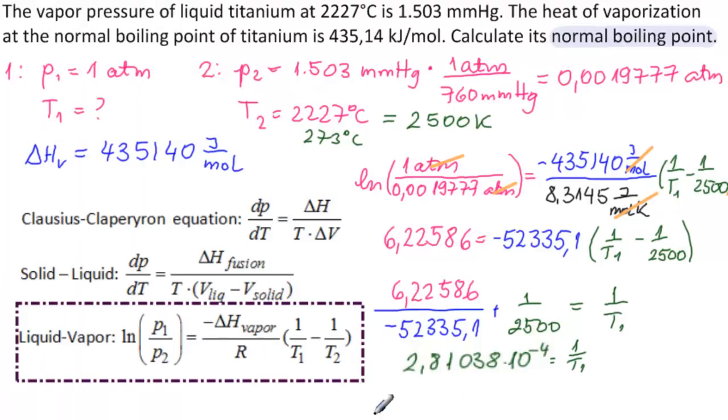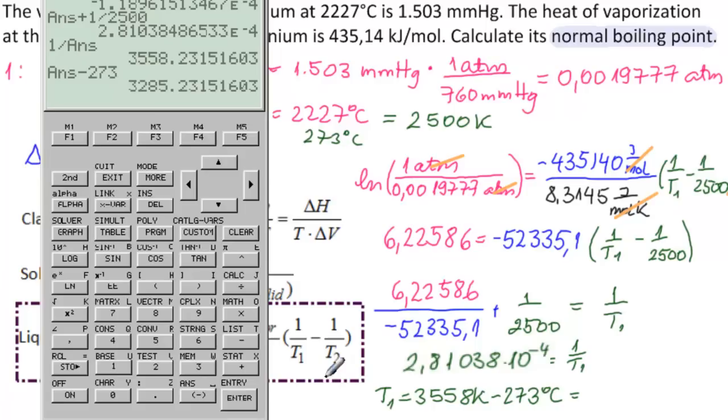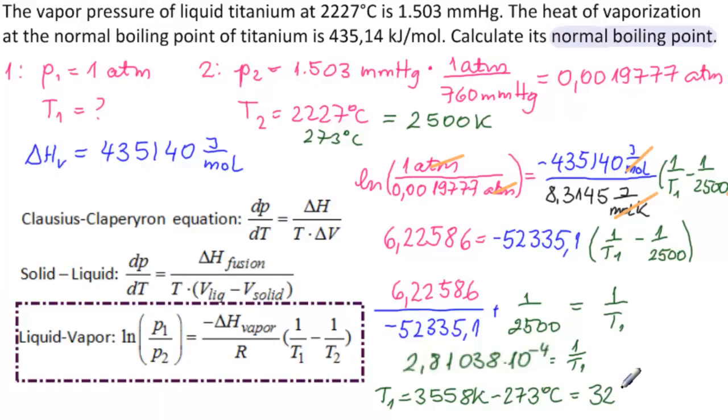So T1 equals 3558 Kelvin minus 273 equals 3285 Celsius. This is the normal boiling point of liquid titanium.